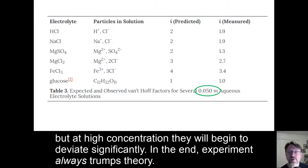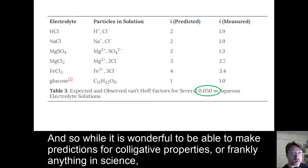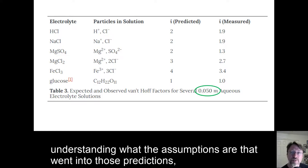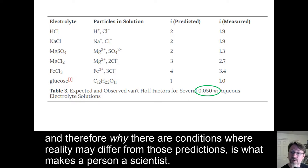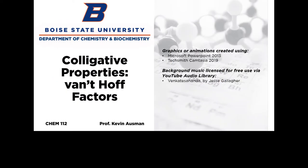In the end, experiment always trumps theory. And so while it is wonderful to be able to make predictions for colligative properties, or frankly anything in science, understanding what the assumptions are that went into those predictions, and therefore why there are conditions where reality may differ from those predictions, is what makes a person a scientist.